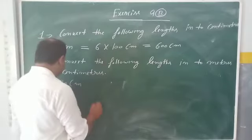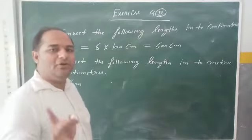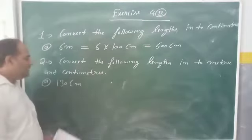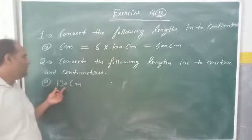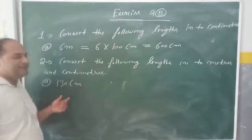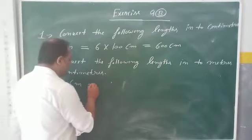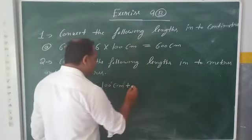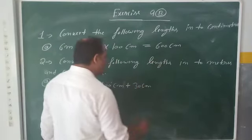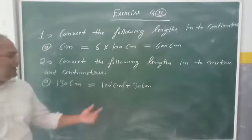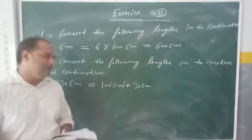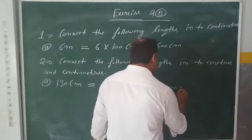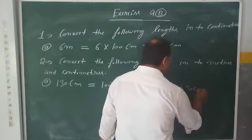We know that 100 centimeters is equal to 1 meter. So we can write 130 centimeters as 100 centimeters plus 30 centimeters, which gives us 1 meter plus 30 centimeters.